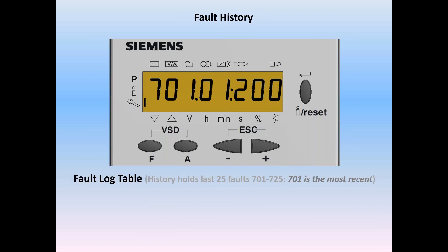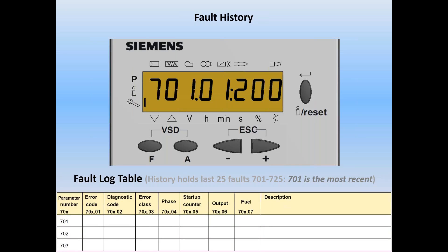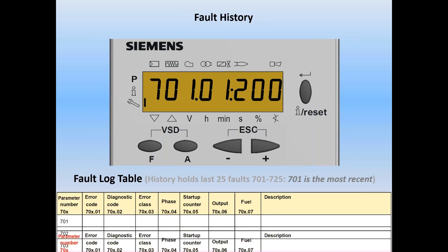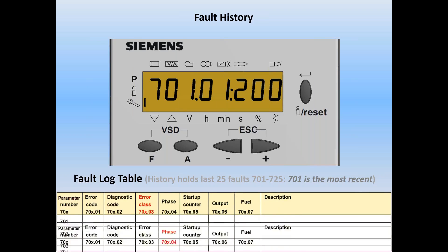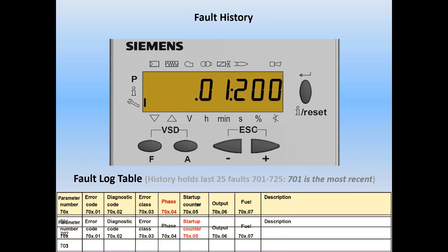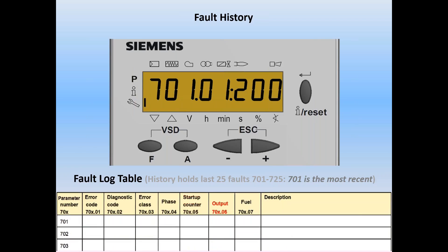The history holds the last 25 faults, parameters 701 to 725. Parameter 701 is the most recent fault. In the fault log table, the columns are: parameter number, error code (index 01), diagnostic code (index 02), class (index 03), phase (index 04), start counter (index 05), output or firing rate (index 06), and — if equipped with dual fuel — LMV36 fuel type (index 07, value 0 or 1). Then we can add our descriptions.